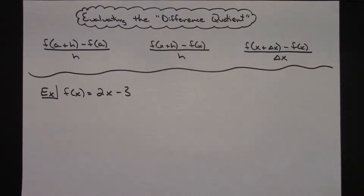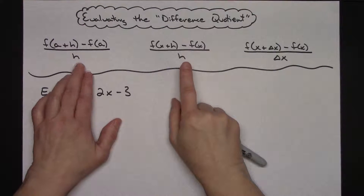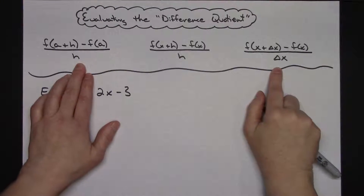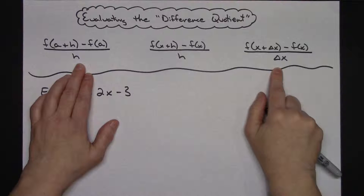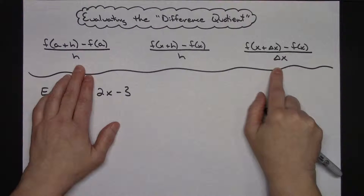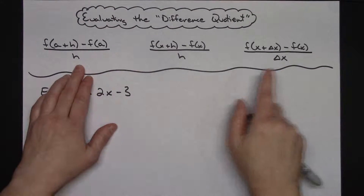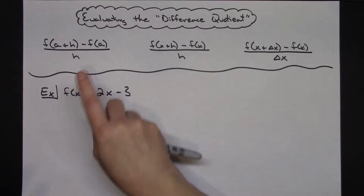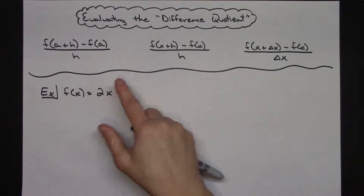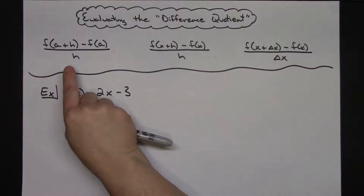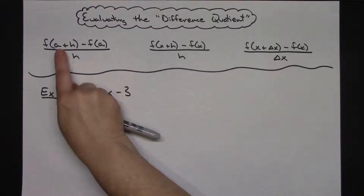Today we're going to be taking a look at how you go about evaluating the difference quotient. To start with I have three different formulas here. All of them are the exact same thing — they're the difference quotient, just different variables are used in each of them. The key thing is being able to read whatever difference quotient your textbook happens to use; you just have to be able to read the notation.